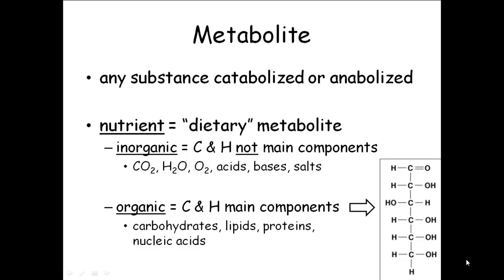A metabolite is basically any chemical substance in your body that your body either builds or breaks down. That's a metabolite. Glucose is a metabolite. Proteins are metabolites. A nutrient is basically stuff that you eat — metabolites that you eat. When we eat food, there's proteins and fats and carbohydrates. Those are nutrients. So when you're eating food, you're eating nutrients, you're eating metabolites — things that your body can either break down or put together to make other stuff.